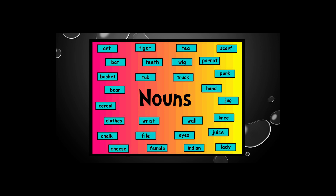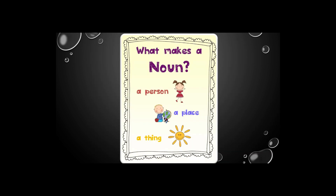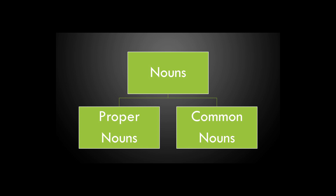First we will learn proper nouns and common nouns under the topic. A noun is a word for a person, place, or thing. Everything we can see or talk about is represented by a word that names it. That naming word is a noun. All nouns can be broadly classified into two types: proper nouns and common nouns.